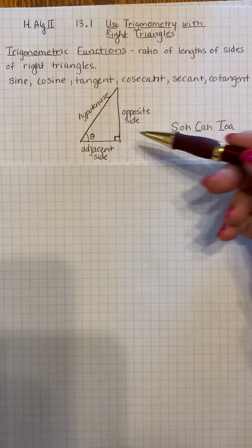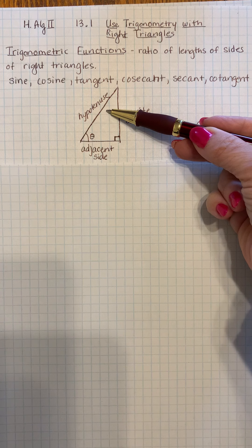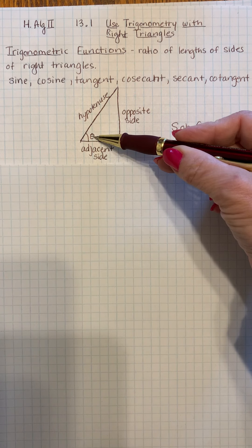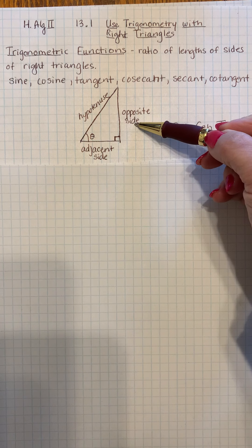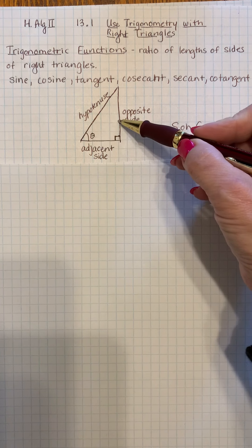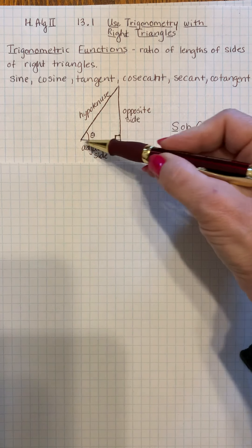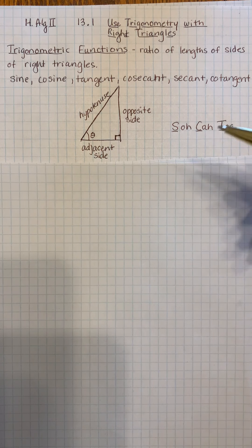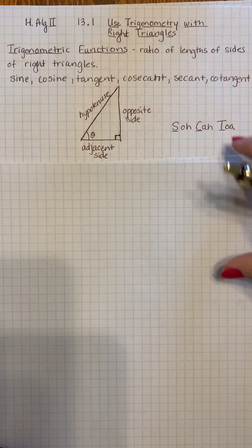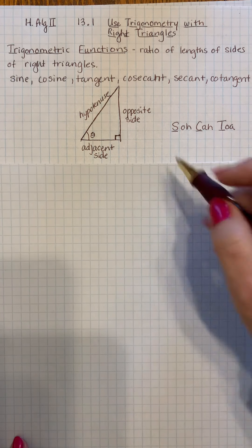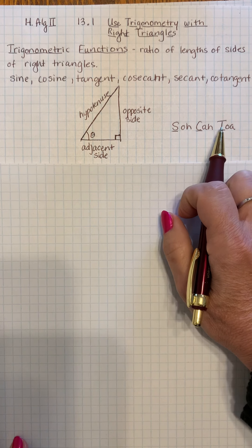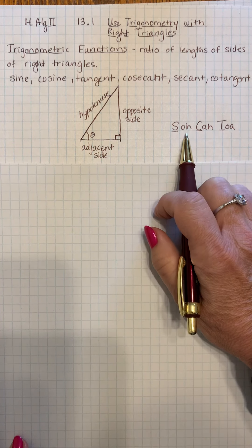So we're going to start off with a right triangle. Here's our right triangle, and here's our hypotenuse. Here's our angle theta. This is the opposite side because it's opposite the angle, completely opposite. This is adjacent because it's right next to it. There is a way to remember how the ratios of these work, and we like to use SOH CAH TOA, sounding like an Indian chief — SOH CAH TOA.